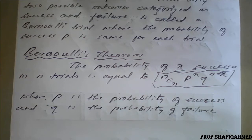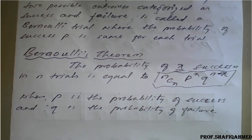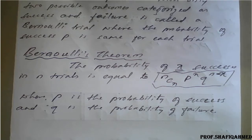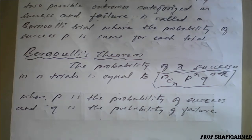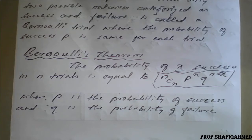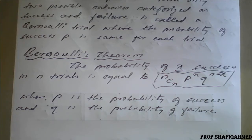With Bernoulli's theorem and repeated trials, in this probability distribution we have four distributions: binomial distribution, Poisson distribution, exponential distribution, and normal distribution. Binomial distribution and Poisson distribution come under discrete probability distribution, while exponential and normal distribution come under continuous random variable.